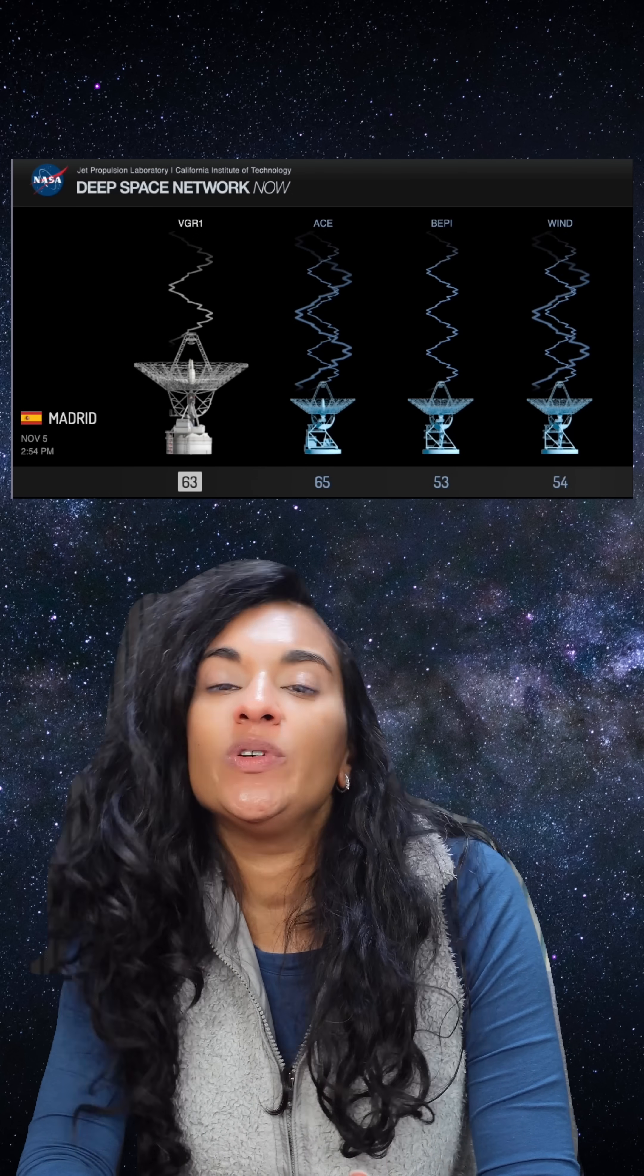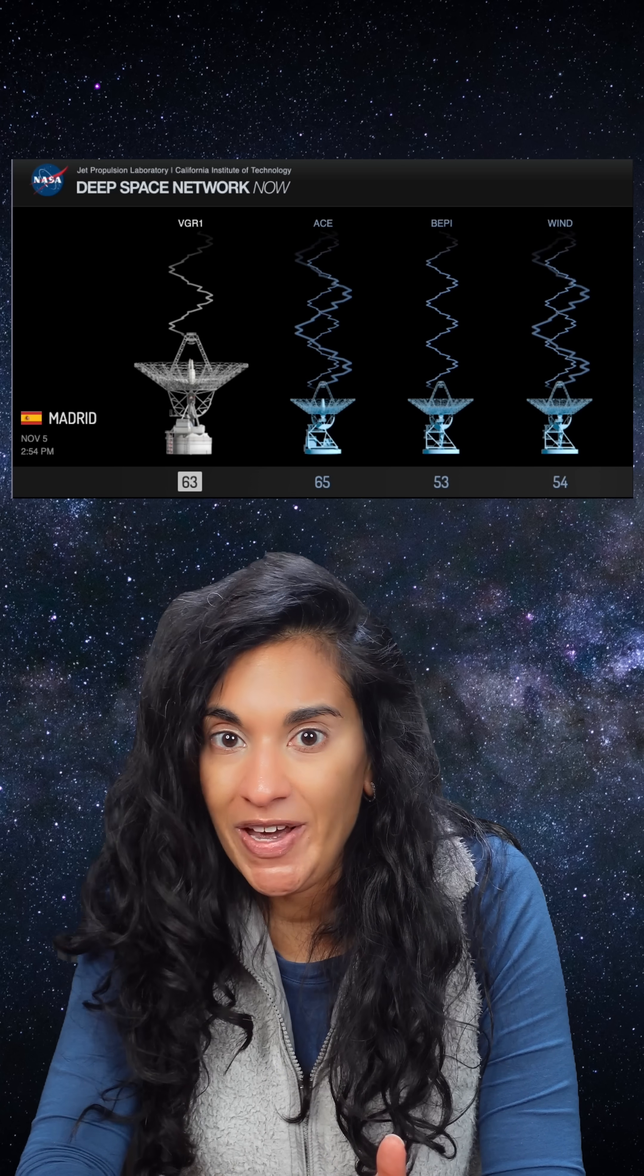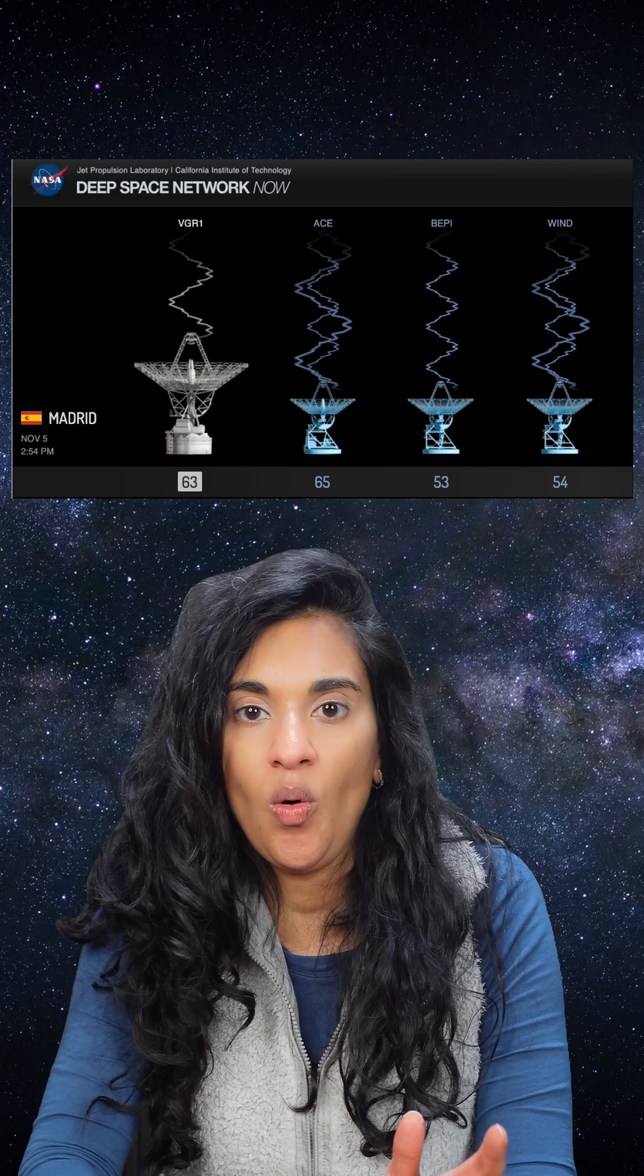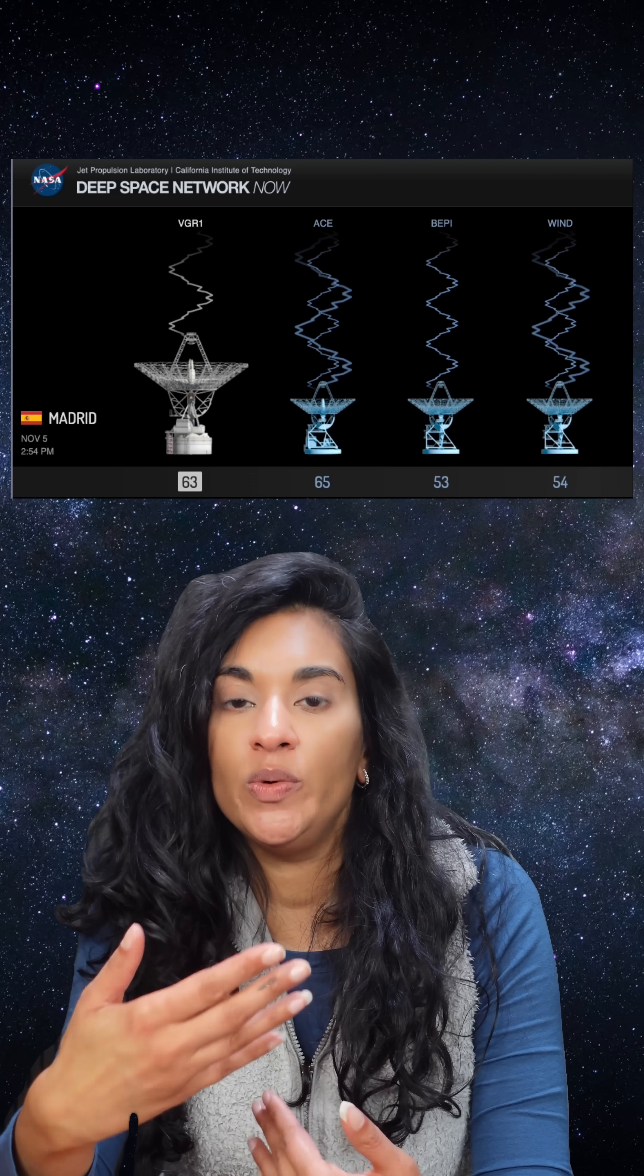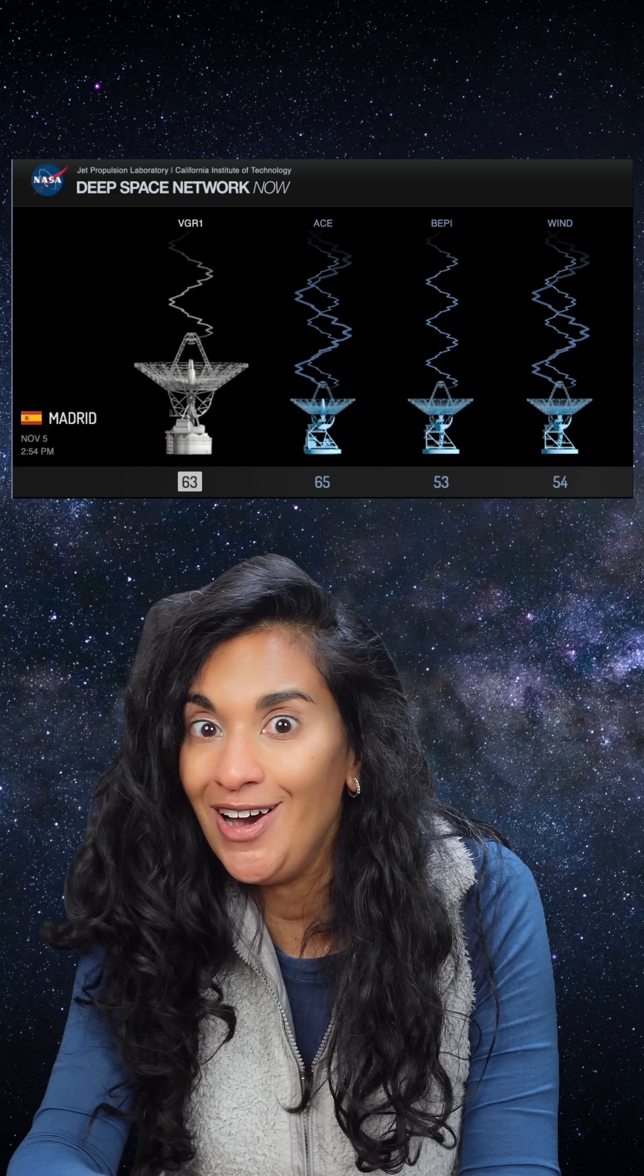The problem was that this transmitter was extremely low power. It was lucky that engineers were able to pick up this S-band signal at all. If they couldn't figure out why this happened and ask Voyager to switch back to its X-band transmitter, then the mission of Voyager 1 would effectively be over.